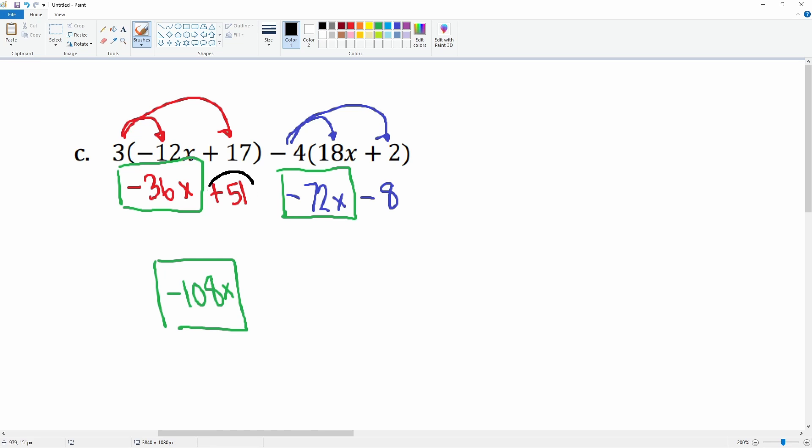Then we have our constant terms: 51 plus negative 8. So 51 minus 8, that gets you 43. So you can write the final answer as negative 108x plus 43.